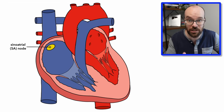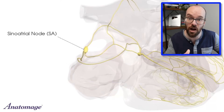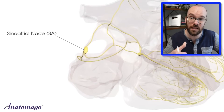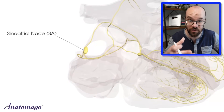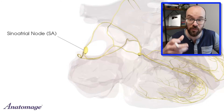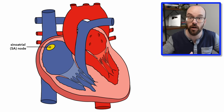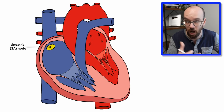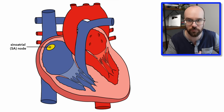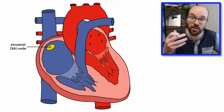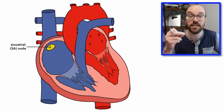Now let's look at the individual parts of the cardiac conduction system. First, the sinoatrial node. The SA node is auto-rhythmic, meaning it sends pulses by itself even without input from another source — auto-rhythmic meaning self-rhythmic. In other words, the SA node is the pacemaker of the heart.